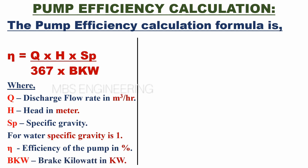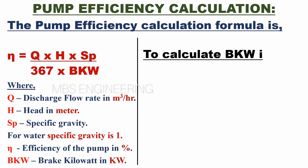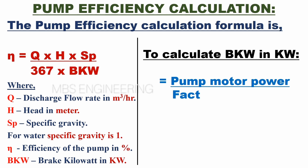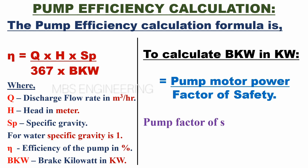We will understand how to calculate the brake kilowatts. The pump BKW is equal to pump motor power divided by the factor of safety. The pump factor of safety varies from 1.4 to 2.25.